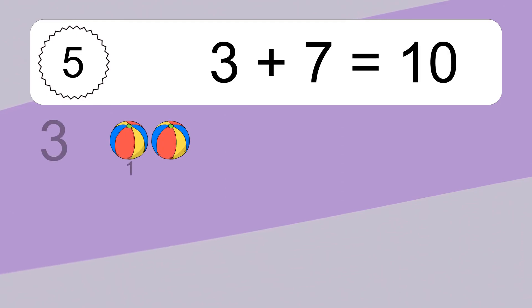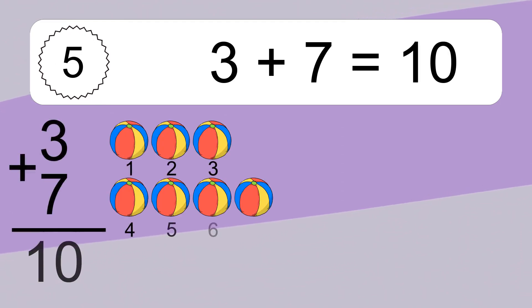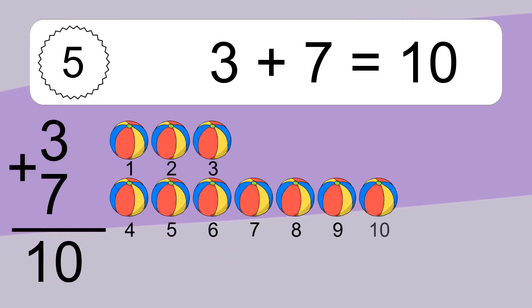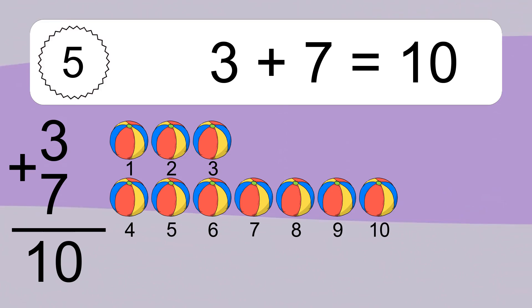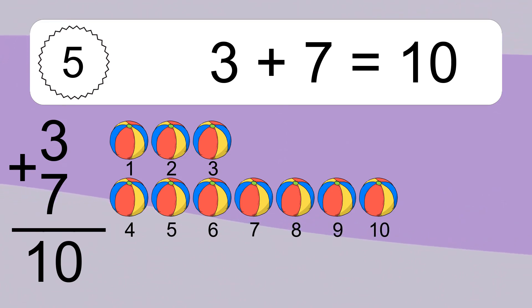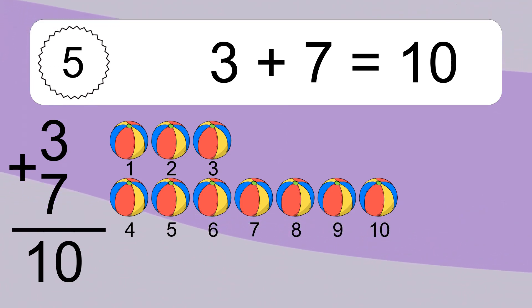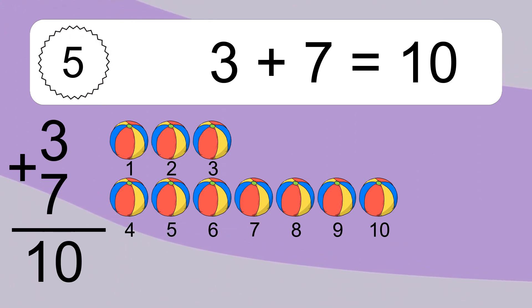3 plus 7 equals what? 3 plus 7 equals 10. Let's count it: 1, 2, 3, 4, 5, 6, 7, 8, 9, 10.